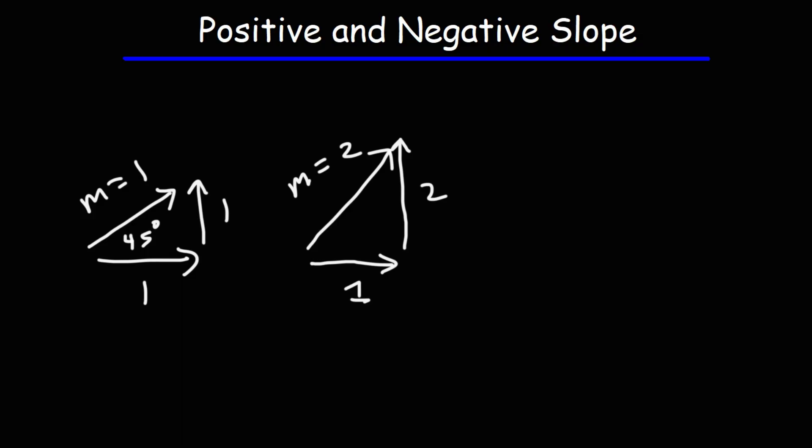The angle that corresponds to that is 63.4 degrees. If you want to calculate the angle, take the arc tangent of the vertical change and divide it by the horizontal change. That'll give you the angle. Make sure your calculator is in degree mode by the way.